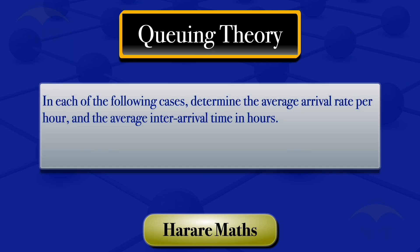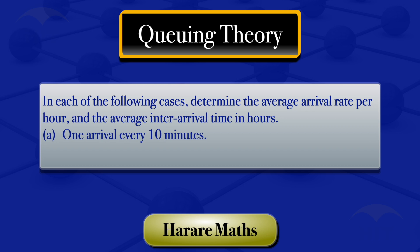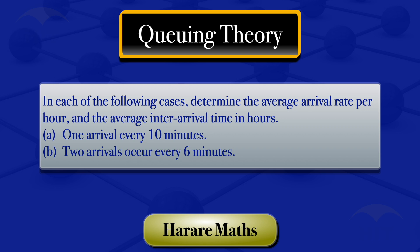In each of the following cases, I'm going to determine the average arrival rate per hour and the average inter-arrival time in hours. For the first one, we'll be looking at 1 arrival every 10 minutes. For the second one, we'll be looking at 2 arrivals occurring every 6 minutes.